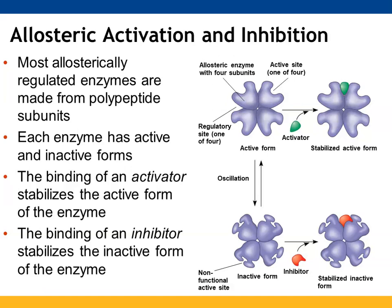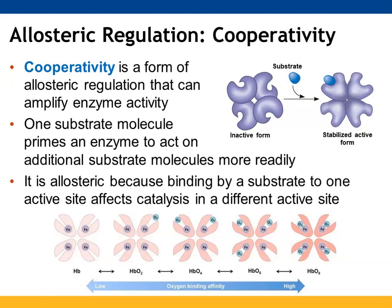Allosteric enzymes can have both activators and inhibitors, depending on what the cell's needs are at the time. Cooperativity is when a substrate molecule binds to one of your active sites and enhances the other active sites present on that enzyme to bind additional substrate molecules. Hemoglobin does this by taking on one oxygen molecule at one of its four active sites, and when it does that it changes the shape of the other components of the hemoglobin molecule so they are more willing to accept additional oxygen molecules until the hemoglobin is fully saturated with oxygen.